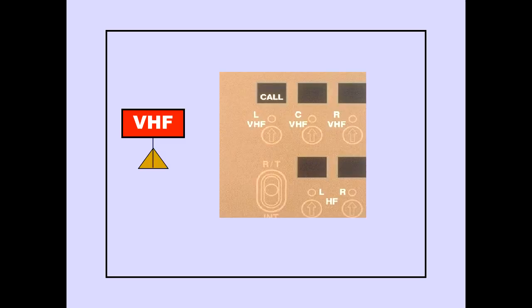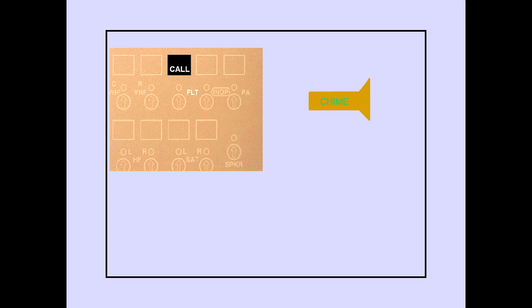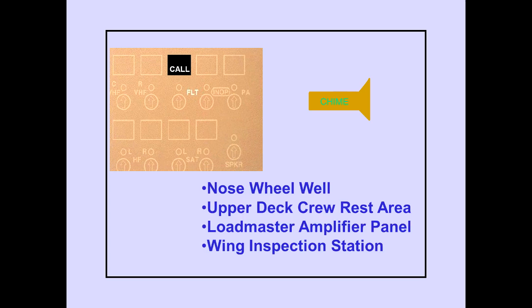A VHF or HF call indication will illuminate when an incoming cell call or ACARS signal is received, and a chime will also sound. A flight deck call indication will illuminate and a chime will sound when the flight deck call switch is pushed in the nose wheel well, upper deck crew rest area, load master amplifier panel, or the wing inspection station on the main cargo deck.